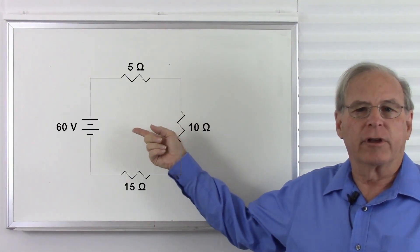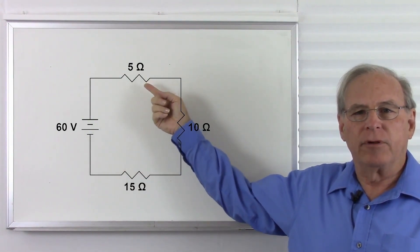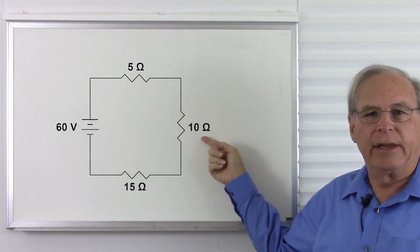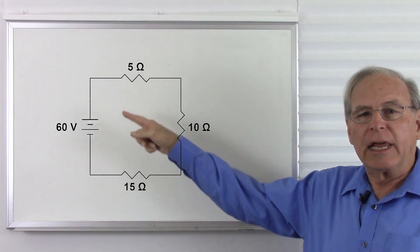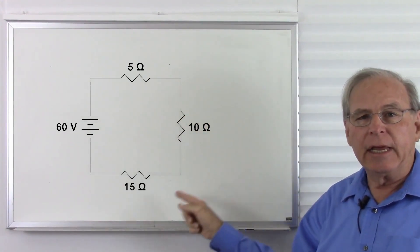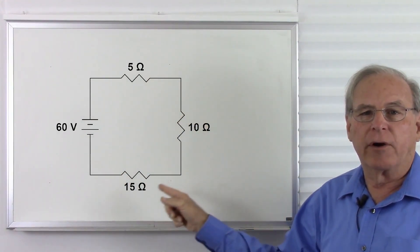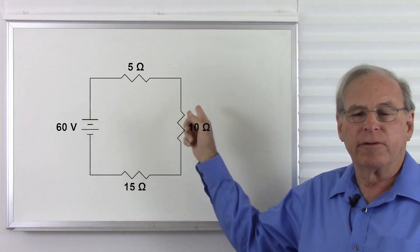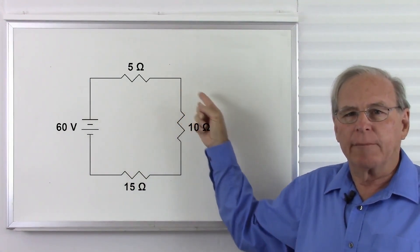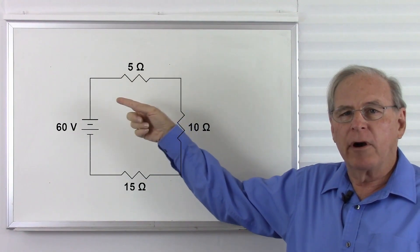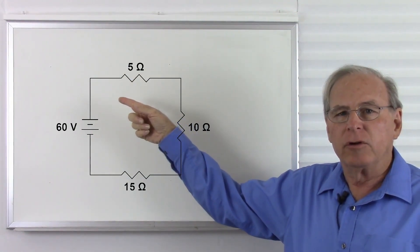Here is a series circuit. We have a 60 volt battery, a 5 ohm resistor, a 10 ohm resistor, and a 15 ohm resistor, laid out end to end in such a way that there is only one possible path for our electrical current to flow. In this particular circuit we will have two amps of current.